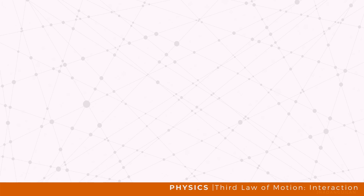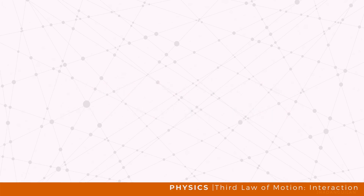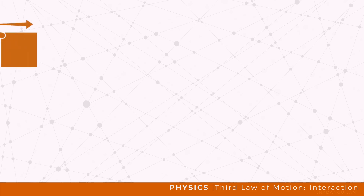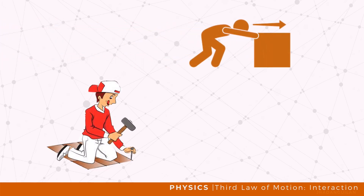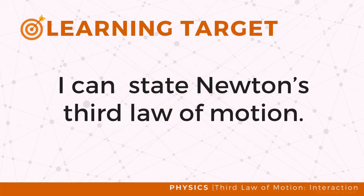In the previous lessons we qualitatively and quantitatively described how forces affect the motion of an object. This leaves us with the question: where do these forces come from? Based on our examples, we can observe that force is always applied on an object by another object — for instance, a person moving a box or a hammer pushing a nail. In this video, you will state Newton's Third Law of Motion.